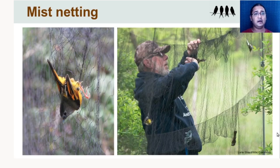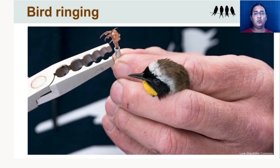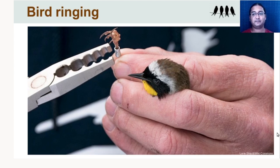Once birds are captured — on the left you see a yellow golden-crested fulvetta captured in a mist net — they're very carefully removed and processed further. The first thing people do is use specialized aluminum rings and specialized banding pliers. Different-sized rings are used for different bird species, and the plier has holes of different sizes so you can ring birds of different sizes. These numbered aluminum rings are placed on the birds; they don't hurt the birds — it's like wearing a bangle or bracelet.